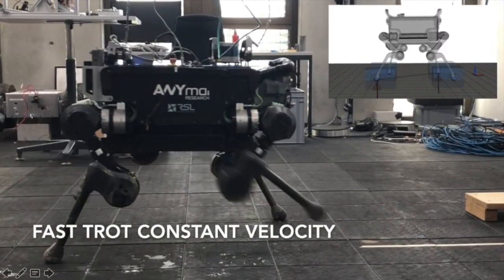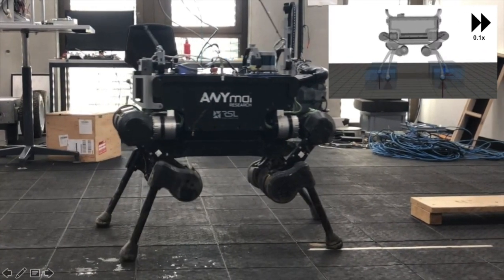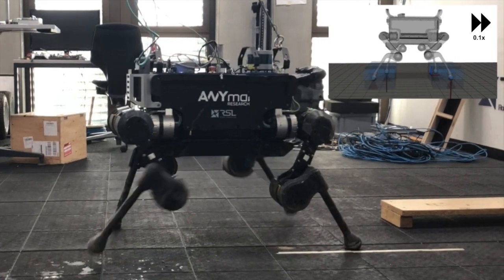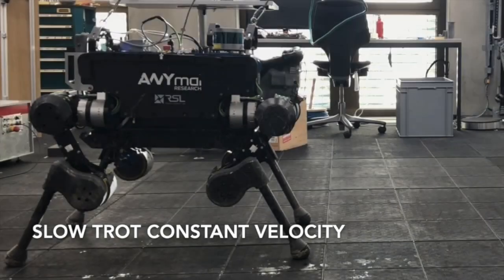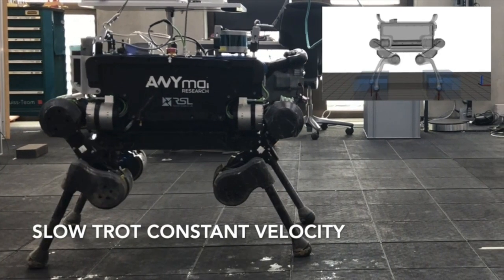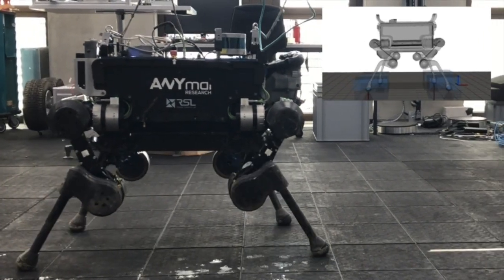Here we create a trotting motion on ANYmal at speeds of up to 0.36 meters per second and we measure the joint data. We then recreate the same trotting motion in TOWR, which we use to calculate the joint data in Vitruvio, and then we compare our simulated results with the measured joint data.